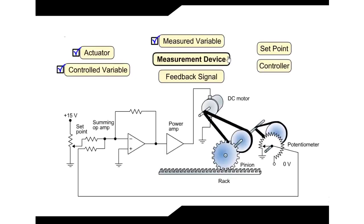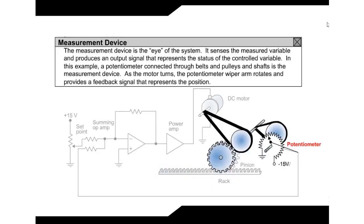Measurement Device: The measurement device is the eye of the system. It senses the measured variable and produces an output signal that represents the status of the controlled variable. In this example, a potentiometer connected through belts, pulleys, and shafts is the measurement device. As the motor turns, the potentiometer wiper arm rotates and provides a feedback signal that represents the position.